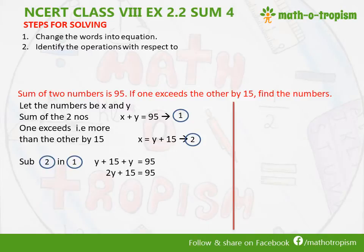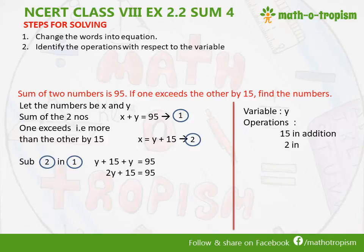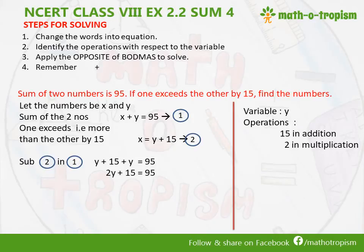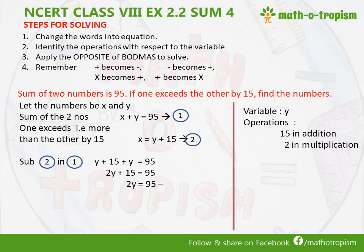The next step is identifying the operations with respect to the variable. The variable here is y. The operations are: 15 is in addition with y, and 2 is in multiplication with y. So we will apply the opposite of BODMAS to solve — first addition, then multiplication. Remember that all operations change sign when they move to the right-hand side. So 15 becomes minus 15: 95 minus 15 gives 80.